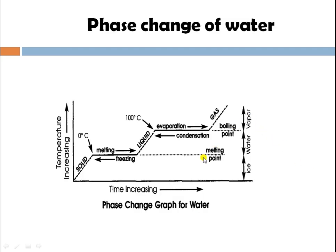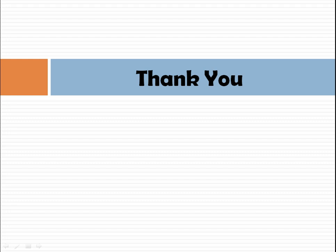This is the graph for phase change: solid starts to melt and converts to liquid, then it starts to evaporate and converts into the gaseous phase. If you continue heating the gaseous phase, it converts into plasma. This is all about the states of matter and phase changes. Thank you.